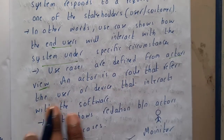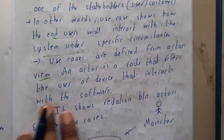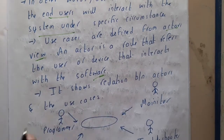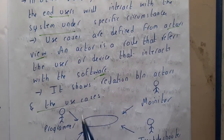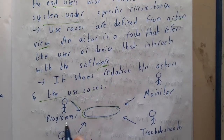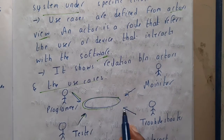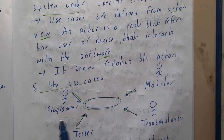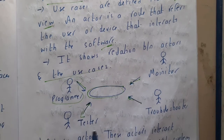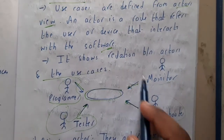An actor is a role that refers to a user or a device that interacts with the software. The diagram shows the relation between actors and use cases. For example, we have actors called programmer, tester, troubleshooter, and monitor.